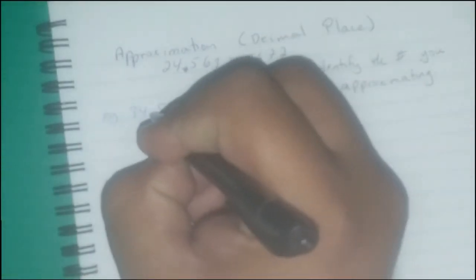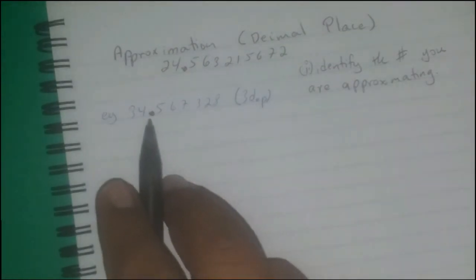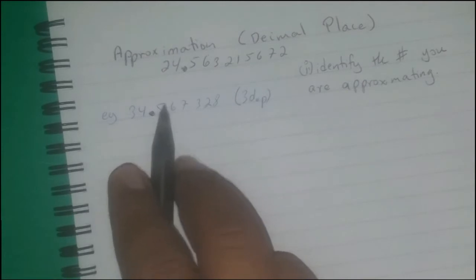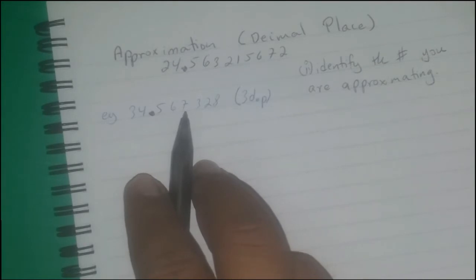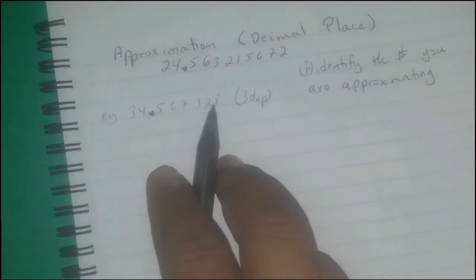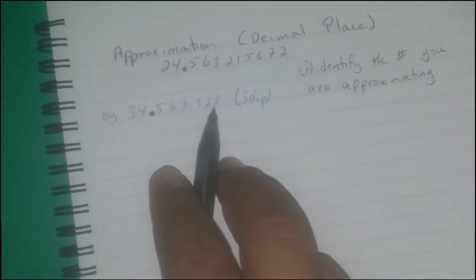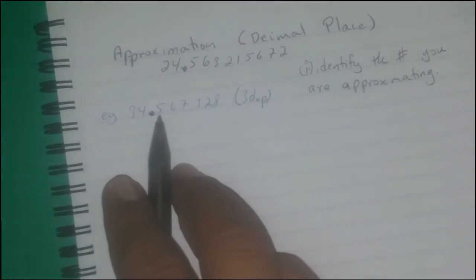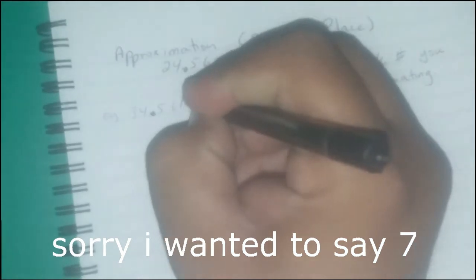When approximating to the nearest decimal place, you just count immediately after the decimal point: the first decimal place is 5, the second decimal place is 6, the third decimal place is 7, the fourth is 3, the fifth is 2, and the sixth is 8. Since we want the third decimal place, the number we are approximating is 7.